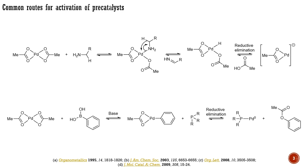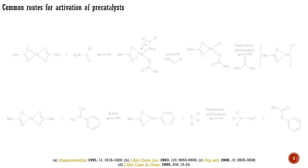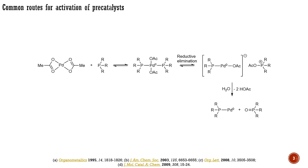Phenylboronic acid or other organometallics are also capable of reducing palladium-2 precatalysts. In this case, a transmetalation to palladium-2 is followed by reductive elimination of phenylacetate, generating a palladium-0 active precatalyst. If primary amines, alcohols, or boronic acids are not present in your reaction mixture as substrates, you can still consider adding them in catalytic quantities for the activation of palladium-2 precatalysts.